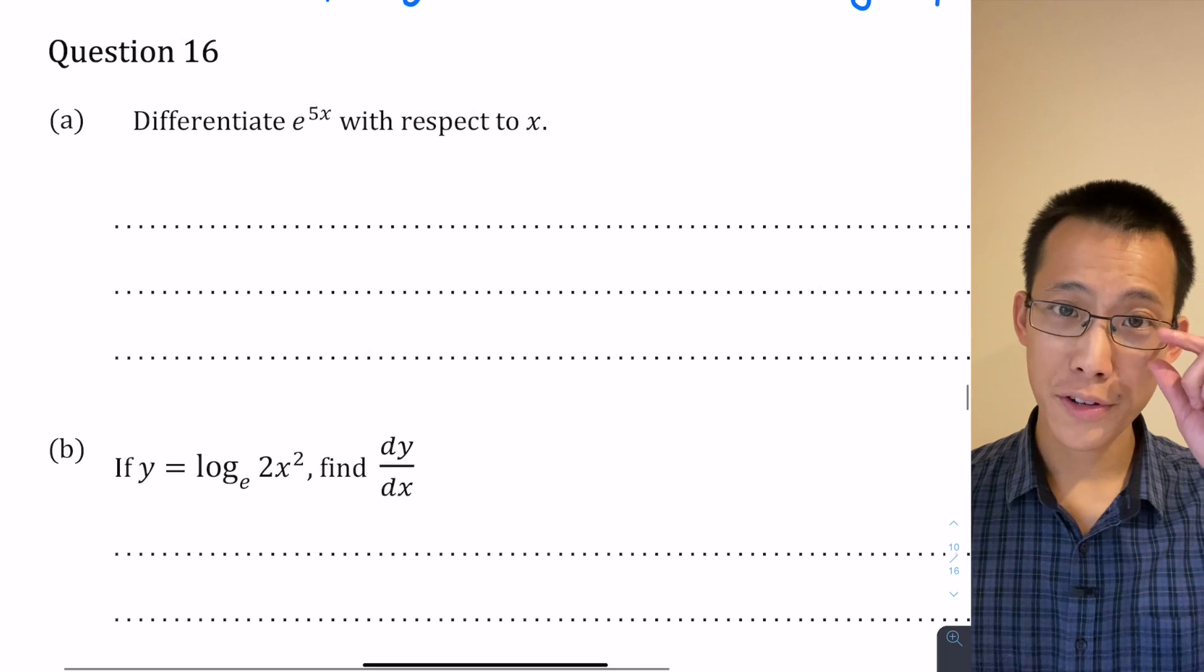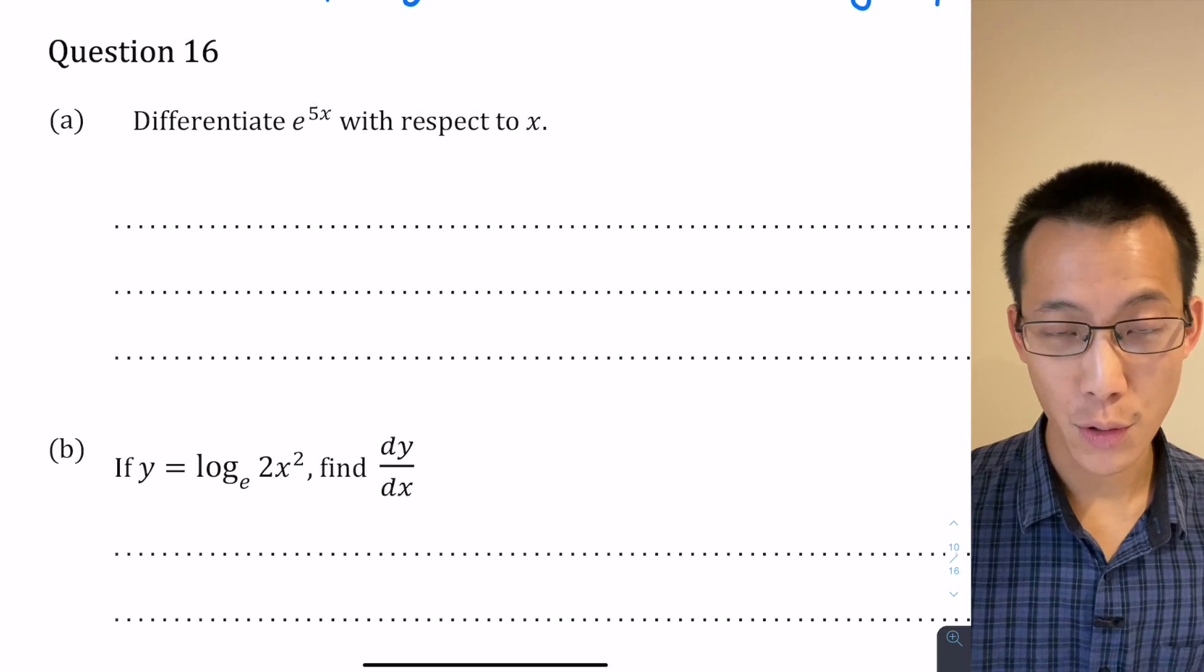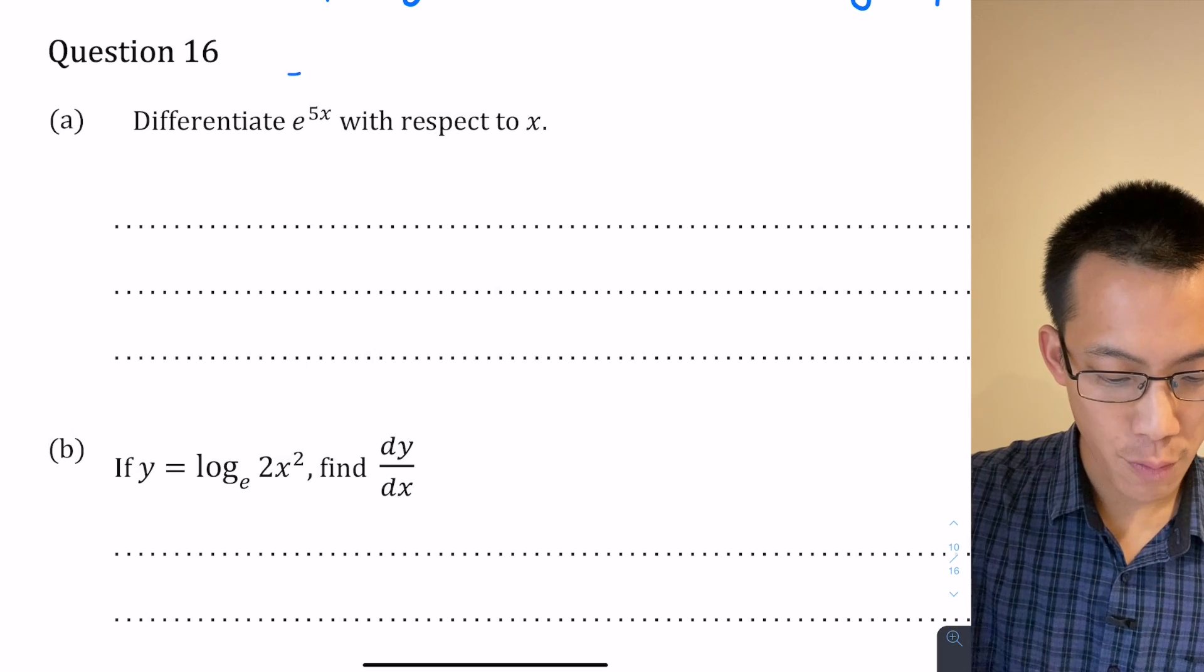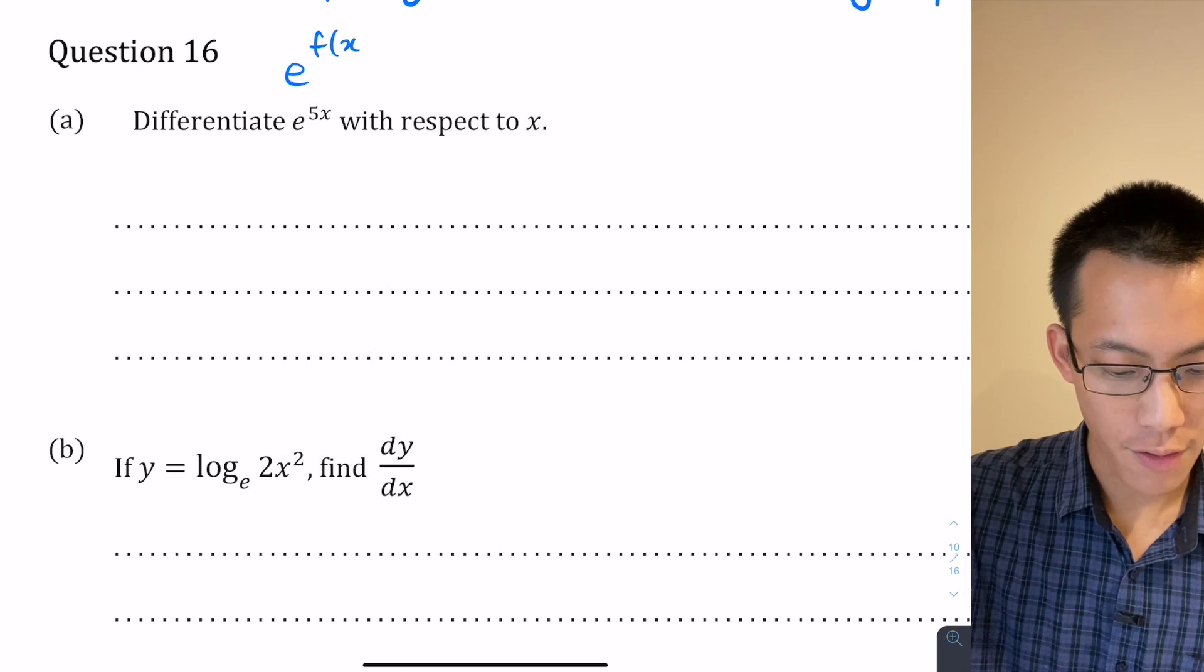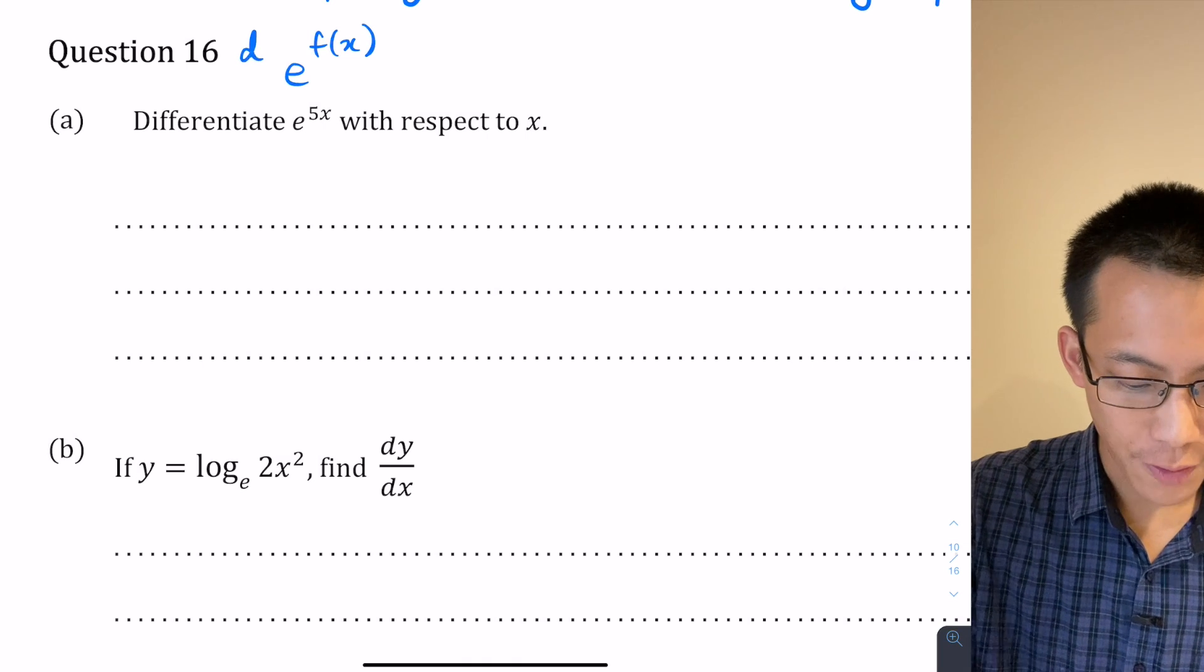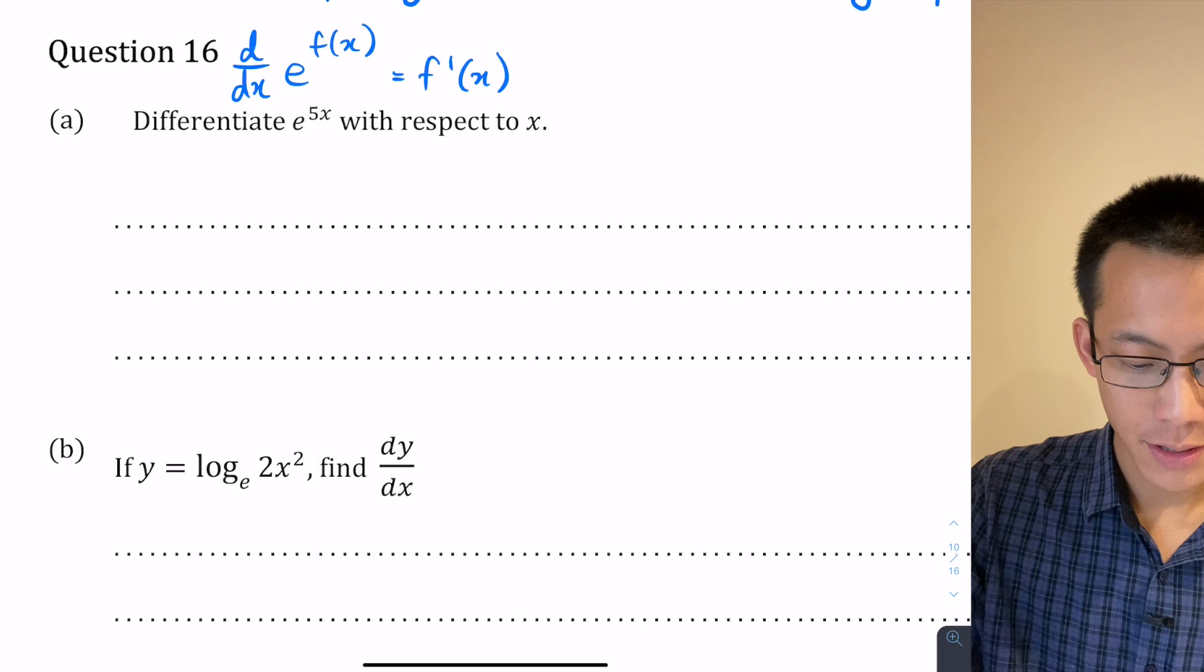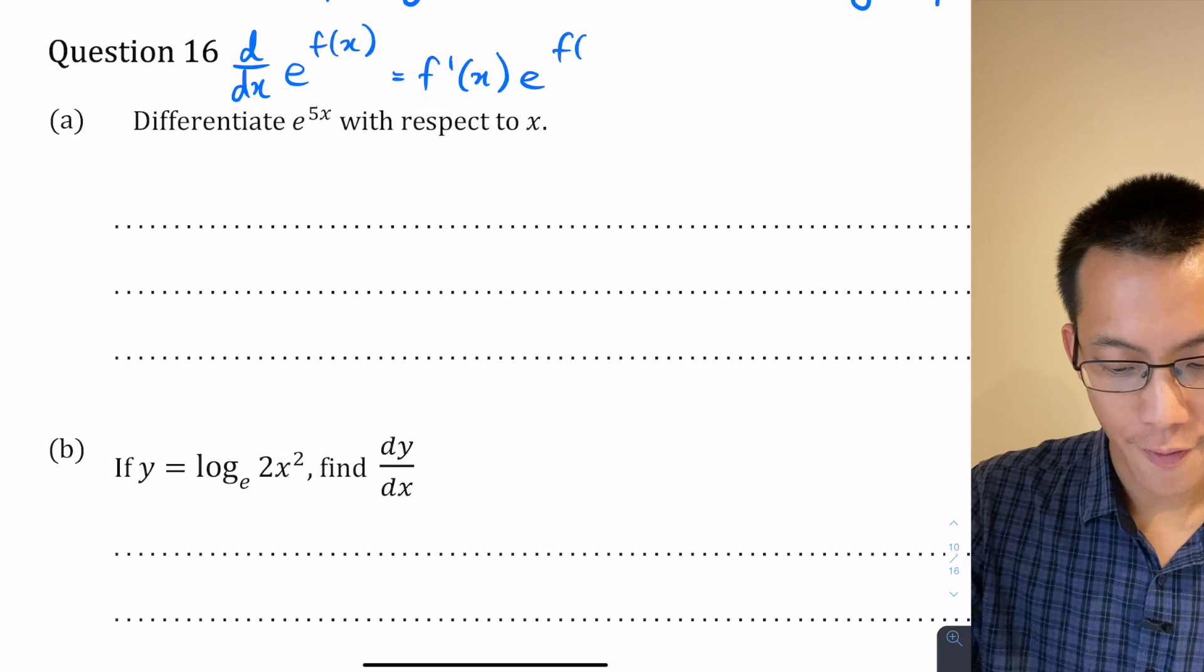Differentiate e to the 5x with respect to x. So this is a callback to some of those earlier questions we were having a look at. Again, this is in the form e to the power of f of x, so my derivative of that will equal f dash x times e to the f of x.